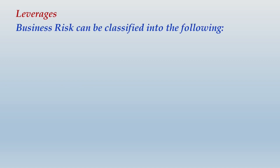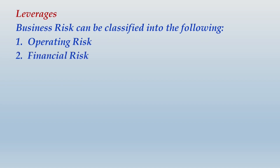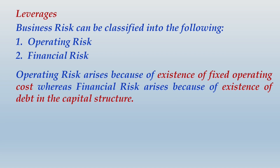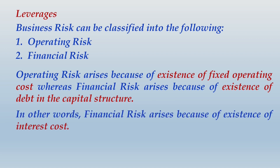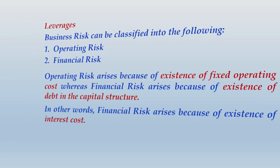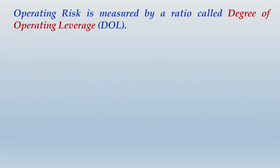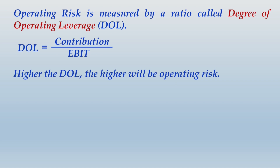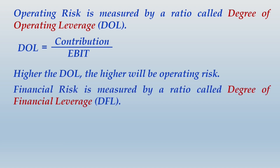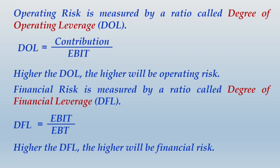Under the heading leverages: business risk is classified into operating risk and financial risk. Operating risk arises because of existence of fixed operating cost; financial risk arises because of existence of debt and interest cost. Operating risk is measured by degree of operating leverage (DOL) = contribution divided by EBIT. Financial risk is measured by degree of financial leverage (DFL) = EBIT divided by EBT. Higher DOL means higher operating risk; higher DFL means higher financial risk.